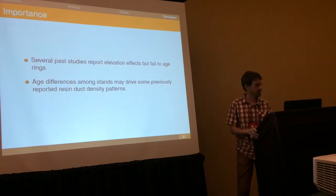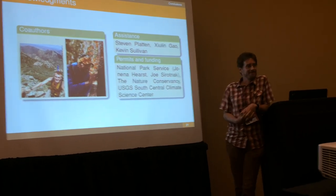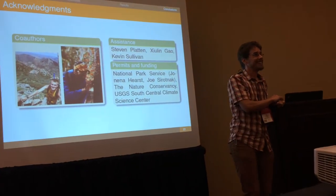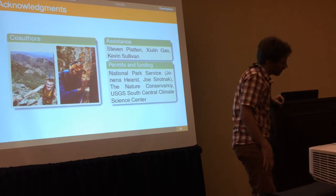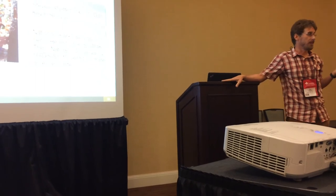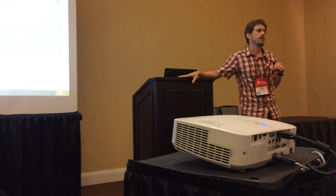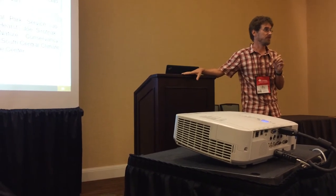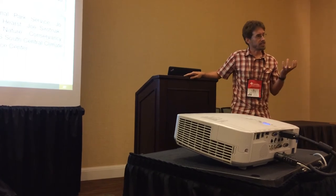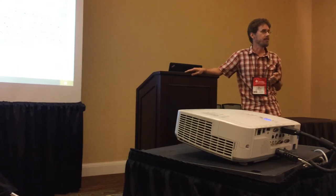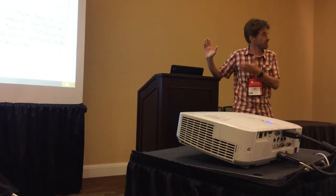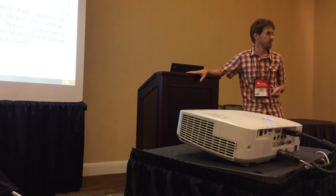Question from the audience: how much does cell number change with ring width — maybe it's just cell size that limits duct numbers? The speaker responds: cell number is often increasing with ring width, and there are also cell size differences, but these anatomy measurements haven't been completed yet for this dataset. Some studies have found resin duct area to be more predictive, which makes sense as a pipe-flow problem, but resin duct density has been the most consistent predictor of susceptibility within population studies empirically — so that's the focus for now.